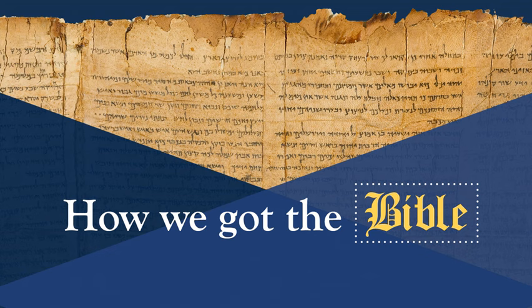When you refer to a minuscule, you cite the number. For uncials, you have a zero out front. For lectionaries, you use a cursive L. This will all come into focus later when we look at critical editions of the Greek New Testament, where the apparatus at the bottom tells you which manuscripts contain certain verses. As for citing a Church Father, you put the name of the father, the name of the book, and then the reference — for example, Book 1, Chapter 4, Paragraph 5.